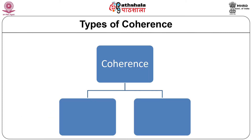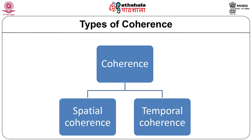Coherence requires that there is a connection between the amplitude and the phase of the light at one point and time, and the amplitude and phase of light at another point and time. Accordingly, coherence is of two types: spatial coherence and temporal coherence.